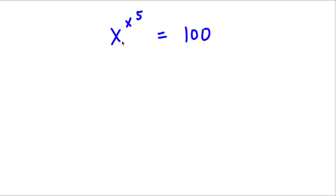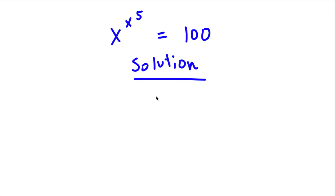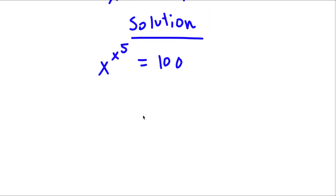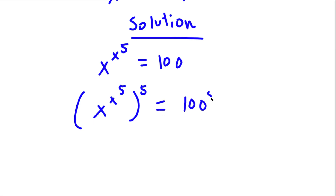Alright, so I have x to the power of x to the power of 5 is equal to 100. Now, for our solution, we obviously start with x to the power of x to the power of 5 is equal to 100. And now what I'm going to do is I'm going to take the power of 5 on both sides. So now I have x to the power of x to the power of 5, to the power of 5, is equal to 100 to the power of 5.